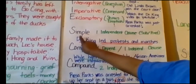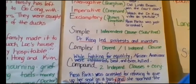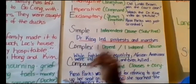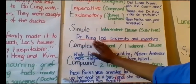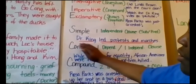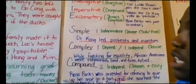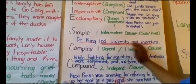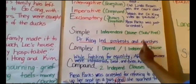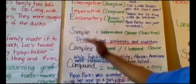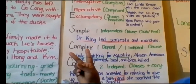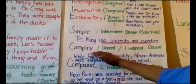The first type is a simple sentence. A simple sentence is just one independent clause — that means you have one subject and one predicate. 'Dr. King led protests and marches.' Who am I talking about? Dr. King. What did he do? Led protests and marches. That's one independent clause.